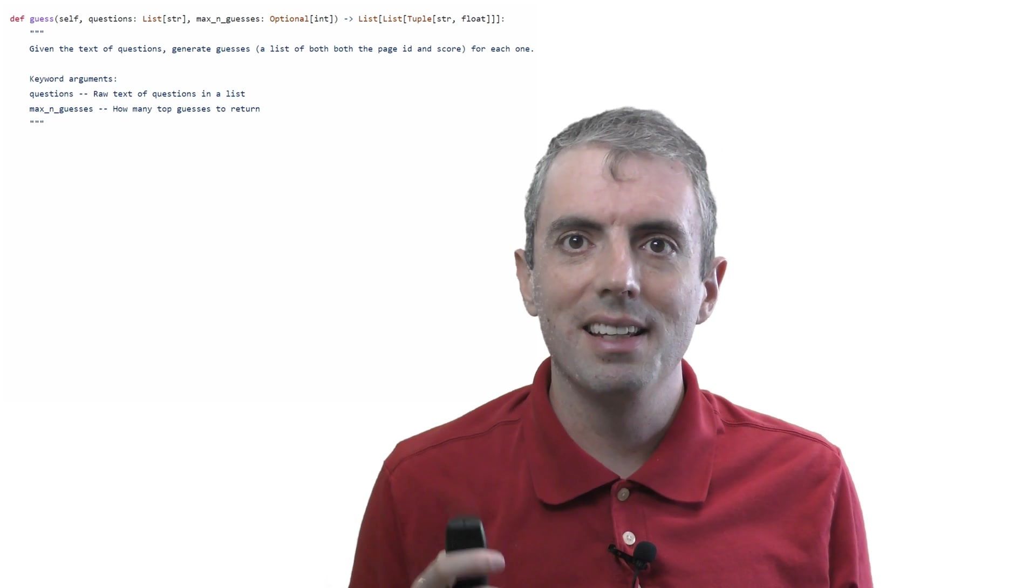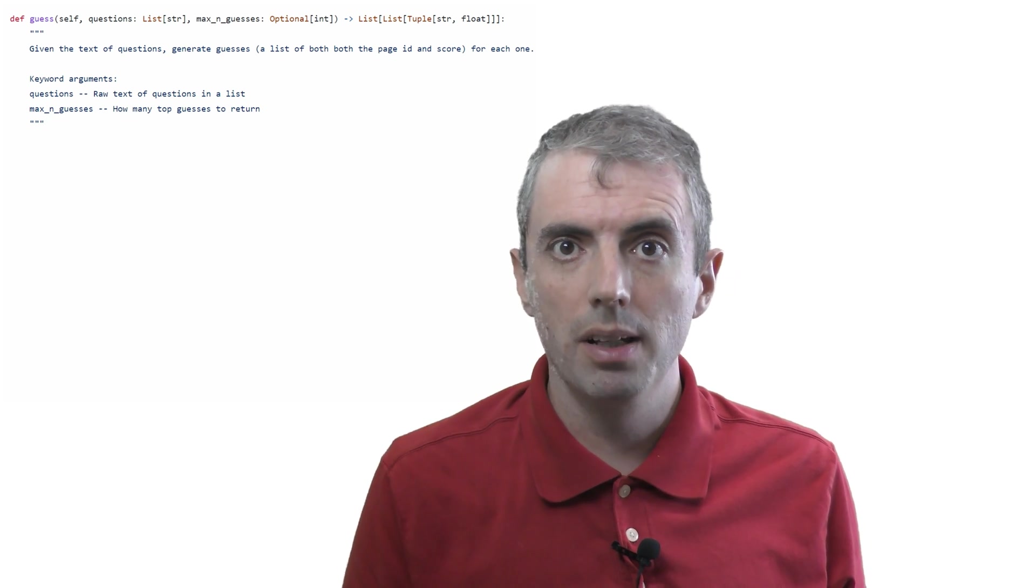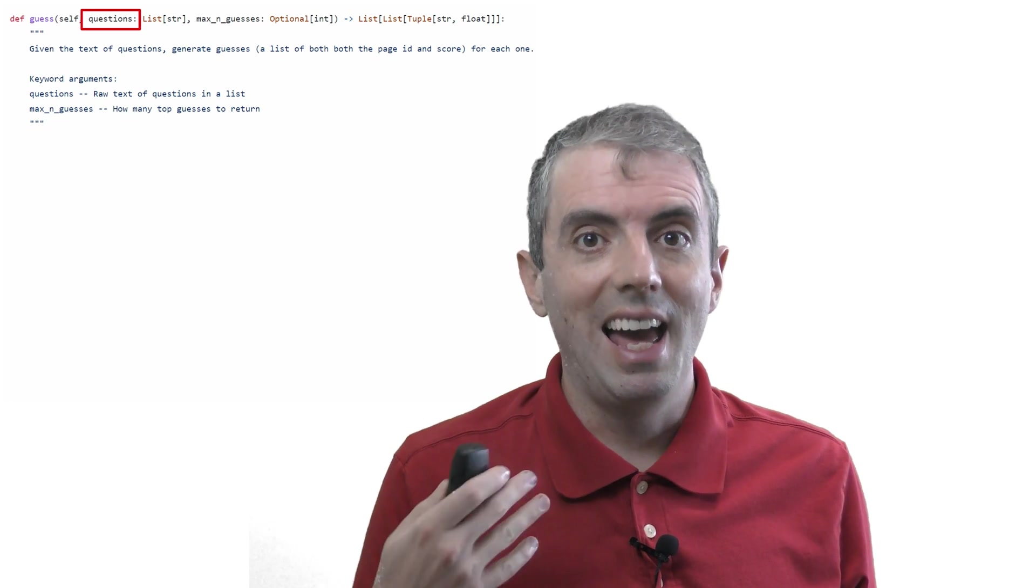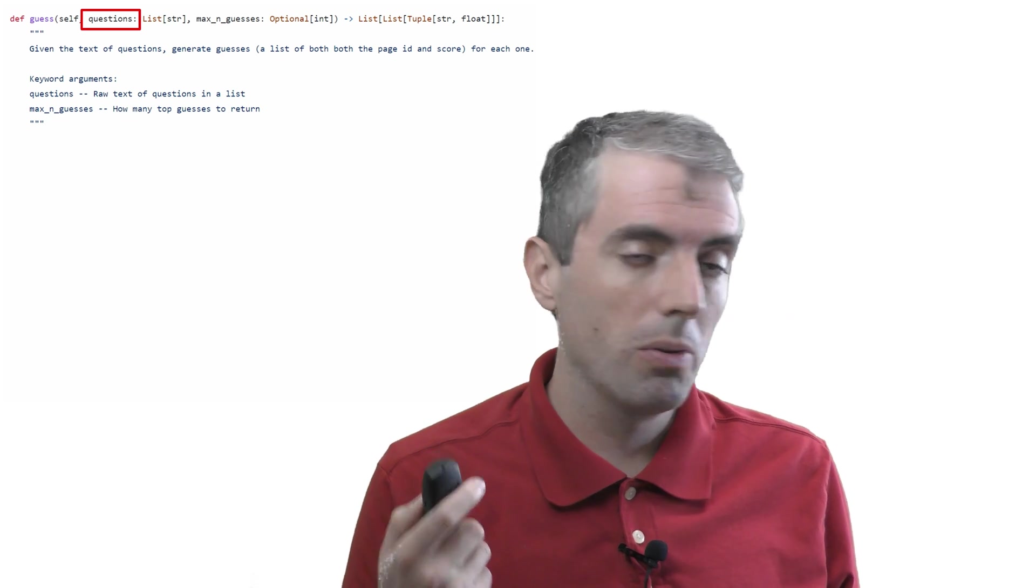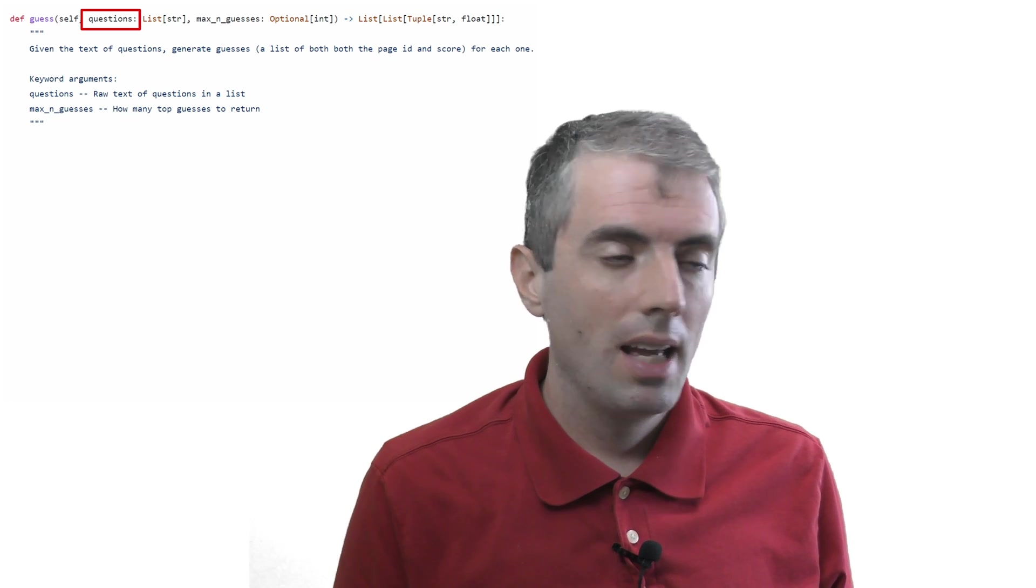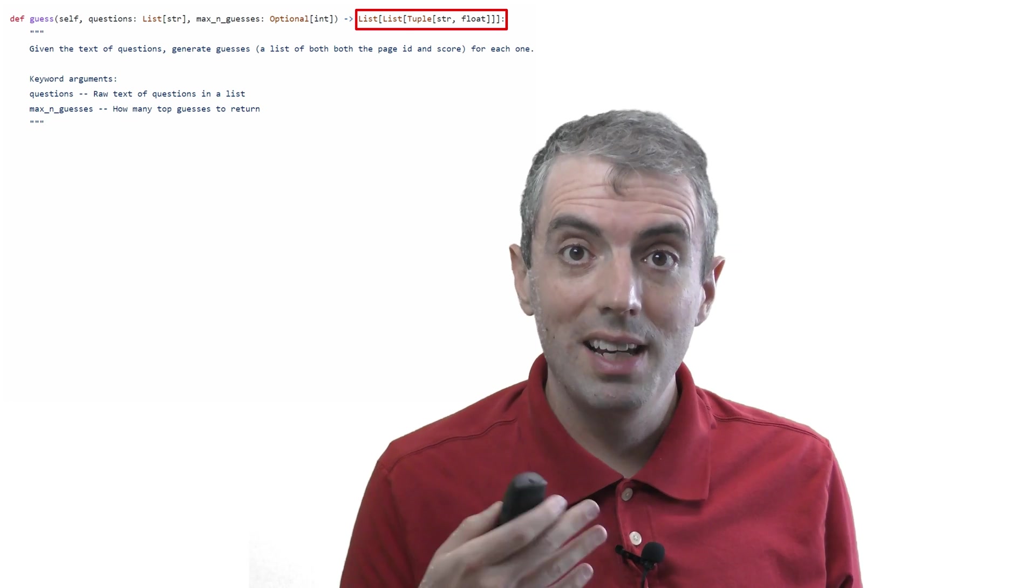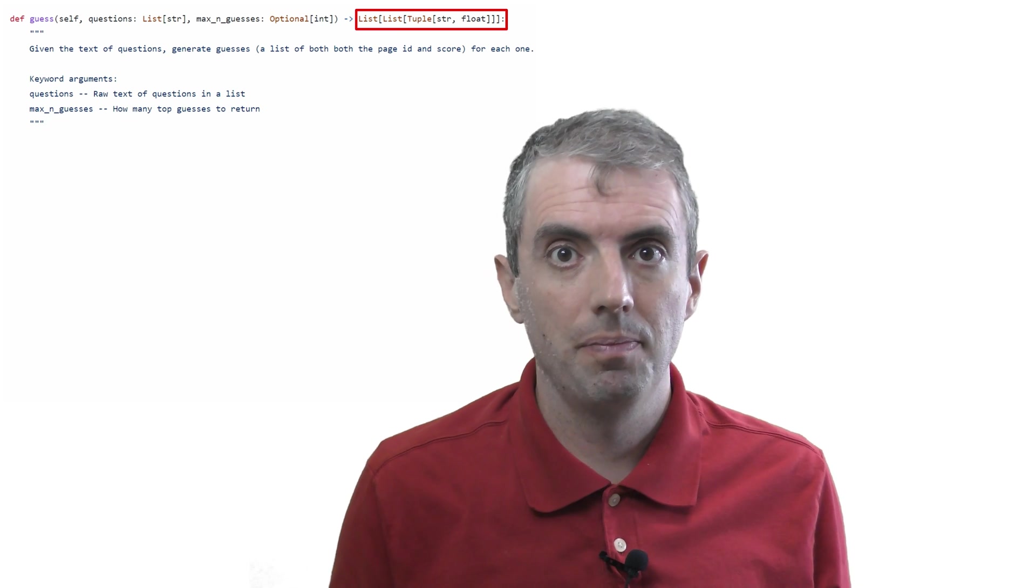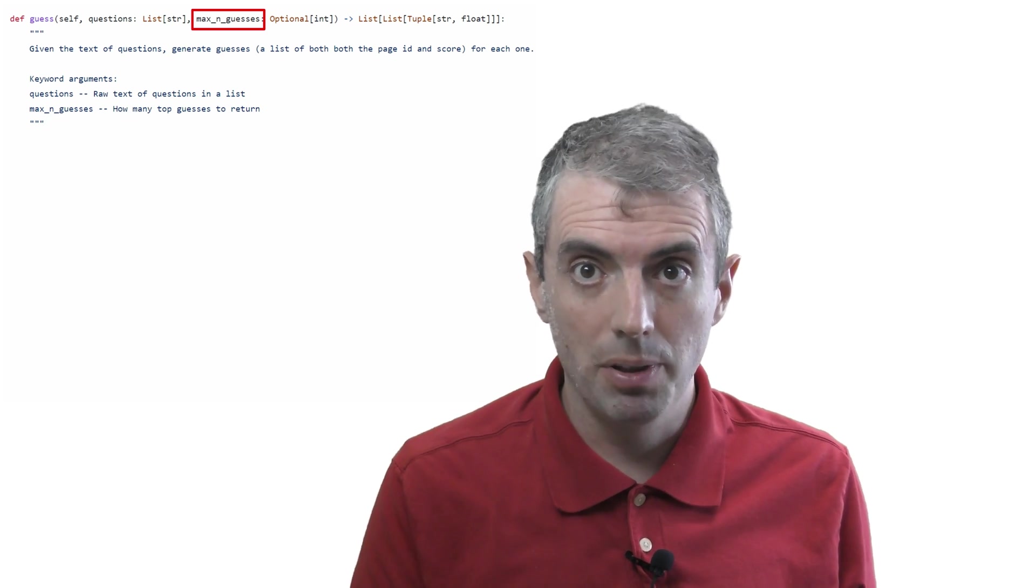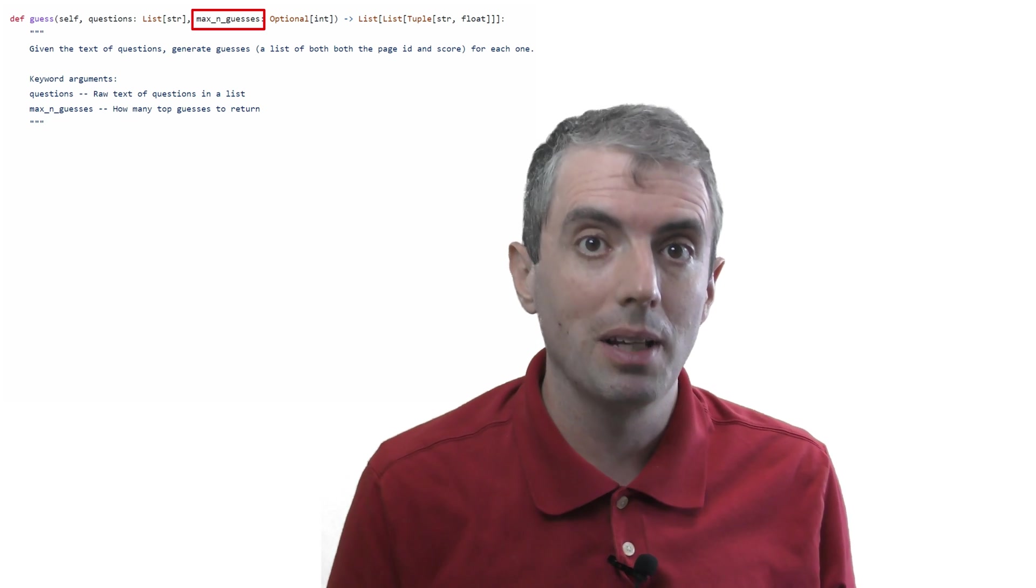Let's first take a look at the guesser. As you can see, it's the first thing to interact with the question. So it needs to take the question as input and then output some guesses. So this is encoded as a Python function, as is everything else. The questions come in as a list of strings. And the guesses come out as a list of lists where each item is a tuple of the guess and the score. The optional argument is how many guesses you should output as the guesser. Obviously you need to give at least one, but we'll see in a second why it's better to have several guesses to pick from.